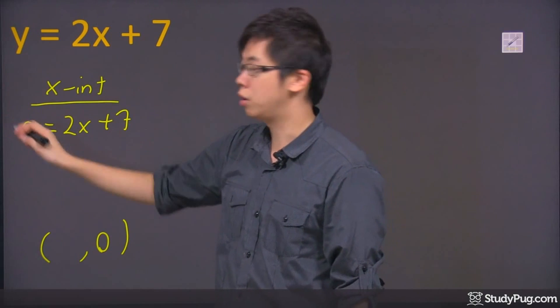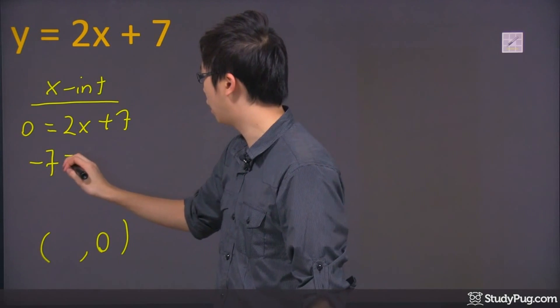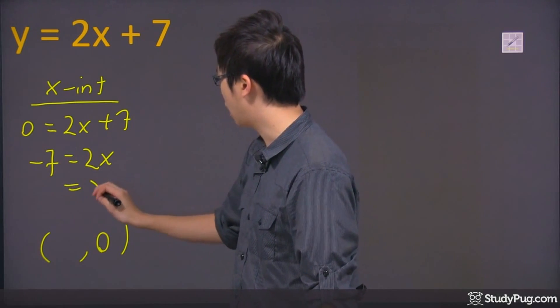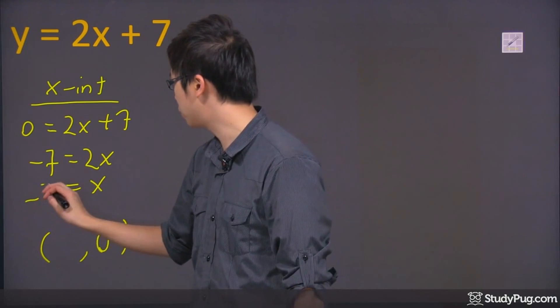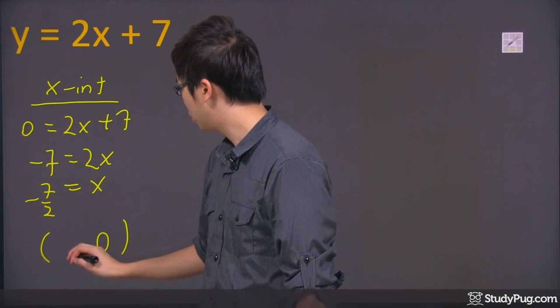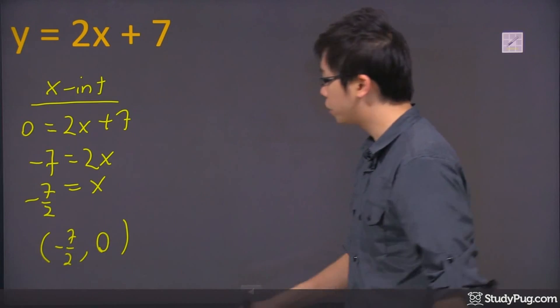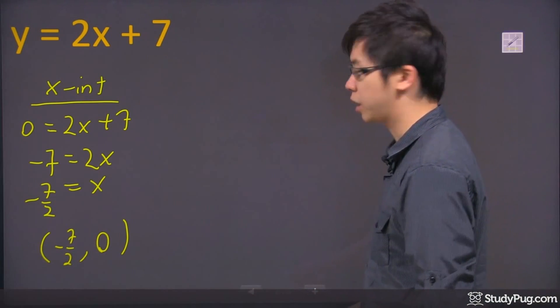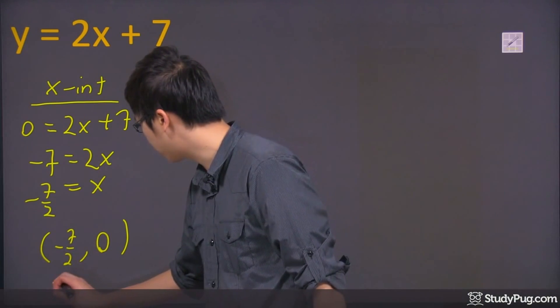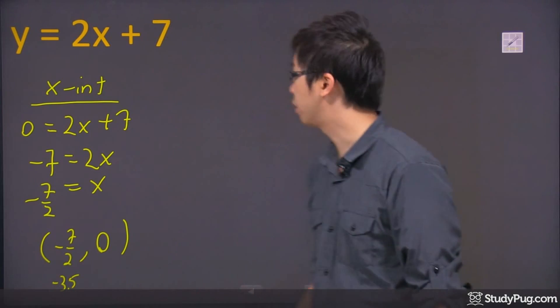You're going to bring the 7 over to the other side, so you get negative 7 equals 2x. If you solve for x, you divide by 2, so it will be negative 7 over 2. So that's your x-intercept, negative 7 over 2, which is like negative 3.5. Let me put negative 3.5 down here because we're going to label that later.